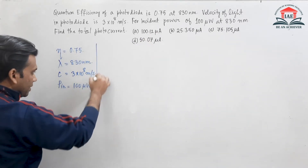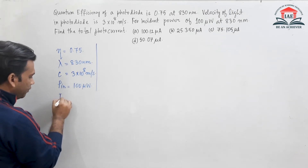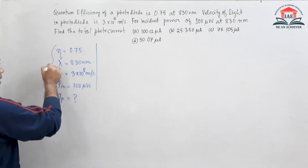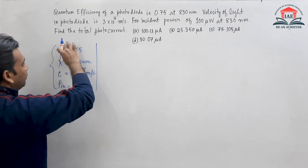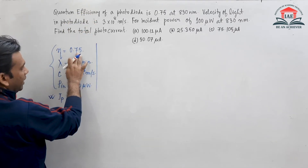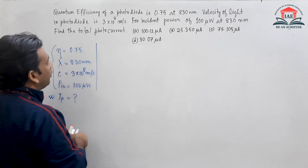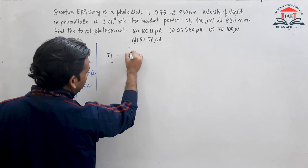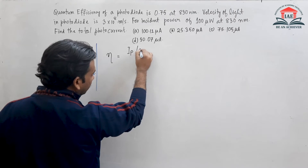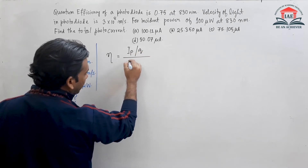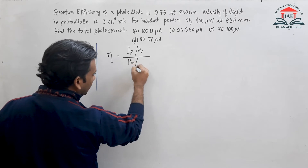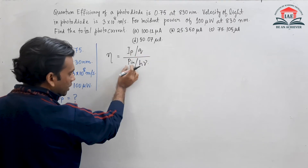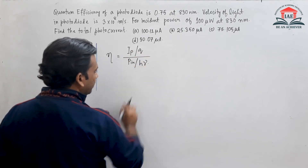From this data, we have to find the photocurrent. Recalling the quantum efficiency equation: η equals the photocurrent ip divided by the electronic charge q, divided by the incident power P divided by hν, where h is Planck's constant and ν is the frequency.